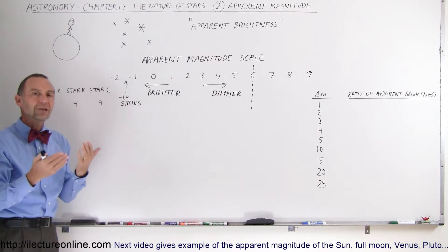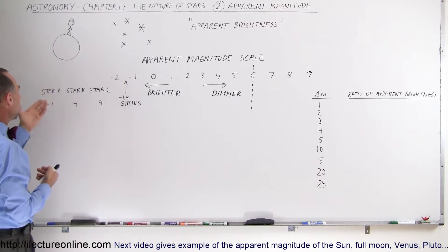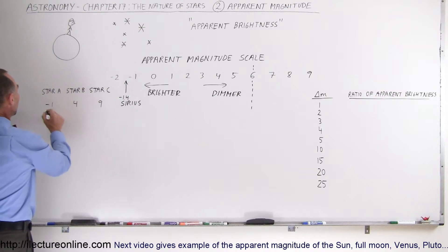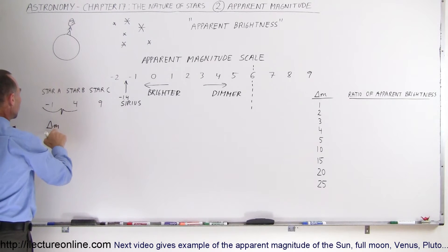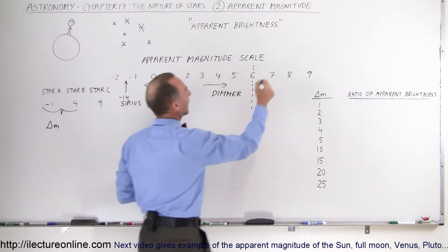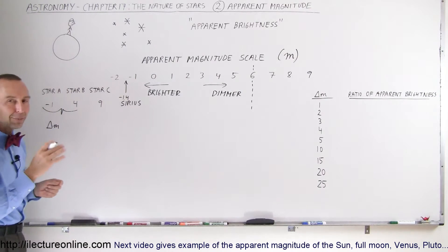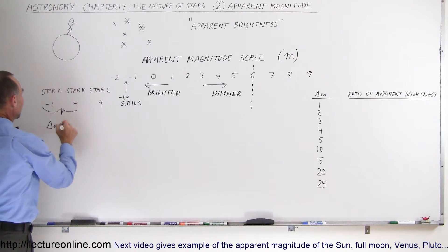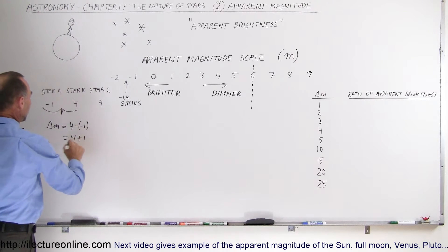So how do we compare the brightness of one star to another? If I wanted to know how much brighter Star A is compared to Star B, the way we do that is we count the difference between the two magnitudes — we call that delta m, where small m is what we use to indicate the apparent magnitude scale. We use a capital M for absolute magnitude, which we'll see in another video. The difference between negative 1 and 4 would be 4 minus negative 1, which is 4 plus 1, which is 5.